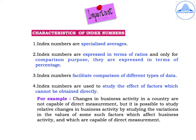Fourth, index numbers are used to study the effect of factors which cannot be obtained directly. For example, changes in business activity in a country are not capable of direct measurement, but it is possible to study relative changes in business activity by studying the variations in the values of factors which affect business activity and which are capable of direct measurement.